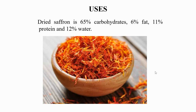Regarding the economic uses of saffron, dried saffron is composed of 65% carbohydrates, 6% fat, 11% protein, and 12% water. These are the chemical constituents of dried saffron.